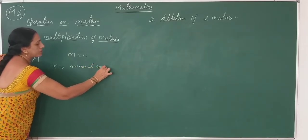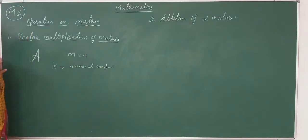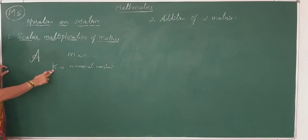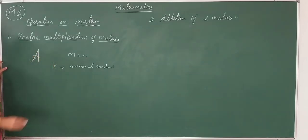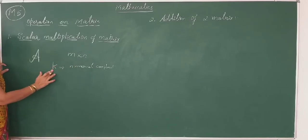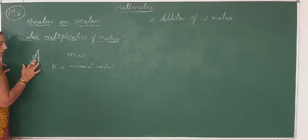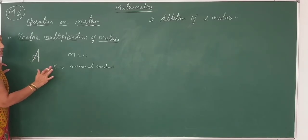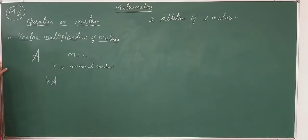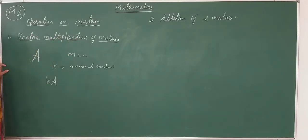A scalar number means it is a numerical constant — any constant, such as real numbers or complex numbers. K is any alphabetical constant except variables like x, y, z. K is a scalar number. Then the multiplication of K into matrix A is called as scalar multiplication of the matrix.